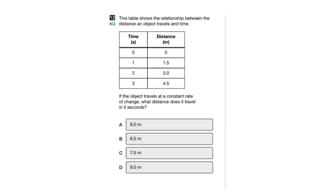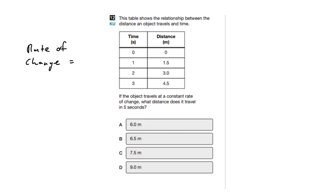Our next question shows a table of the relationship between distance an object travels and time. Our time is going up by one second — from 0 to 1 to 2 to 3. Our distance is going up by 1.5 each time: 0, 1.5, 3.0, 4.5. If you can't find a value, just subtract — for example, 3 minus 1.5. It's a constant rate of change, meaning the object is traveling at 1.5 meters per second.